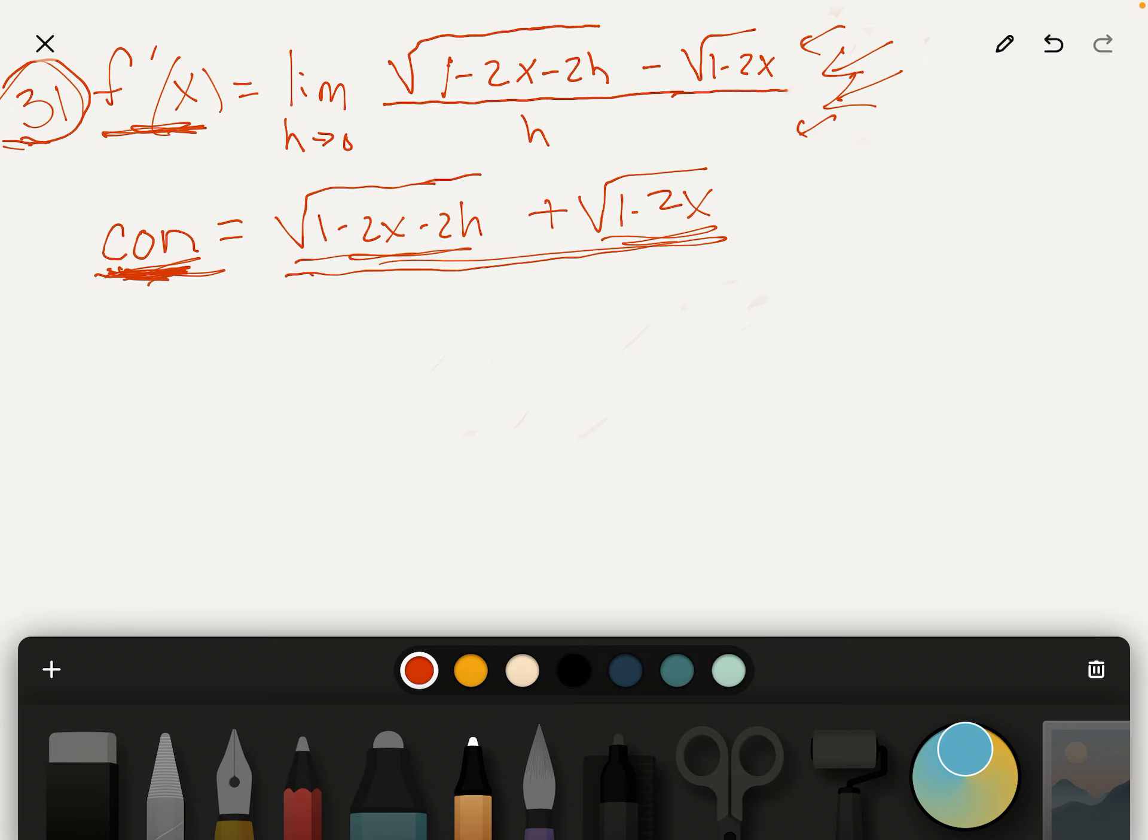It's going to be, the first term is going to be squared, so it's just 1 minus 2x minus 2h minus 1 minus 2x, and notice that this minus sign and this minus sign produce a plus sign.